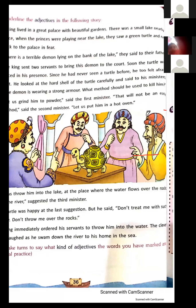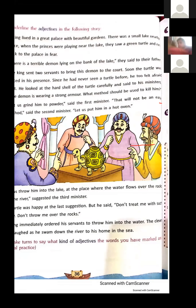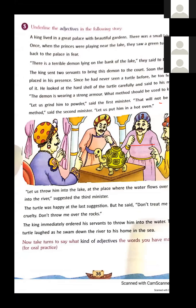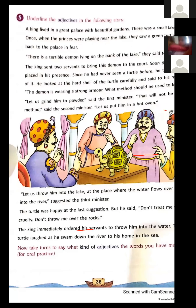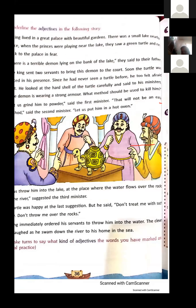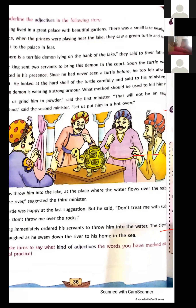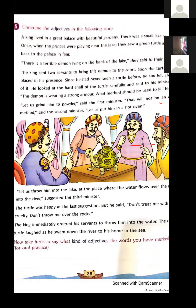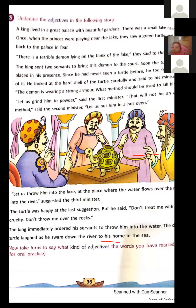The king immediately ordered his servants to throw him into the water — his is a possessive adjective, as these servants belong to the king. The clever turtle laughed as he swam down the river — clever is an adjective of quality; what kind of turtle? Clever. He swam to his home in the sea — his is again a possessive adjective showing possession.